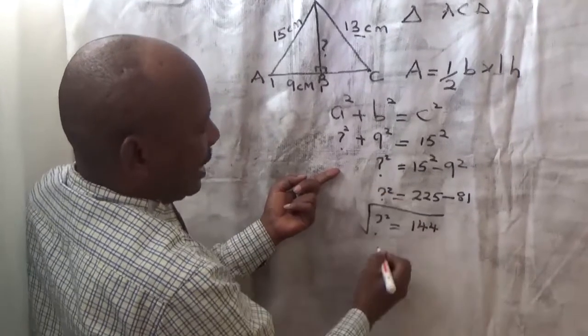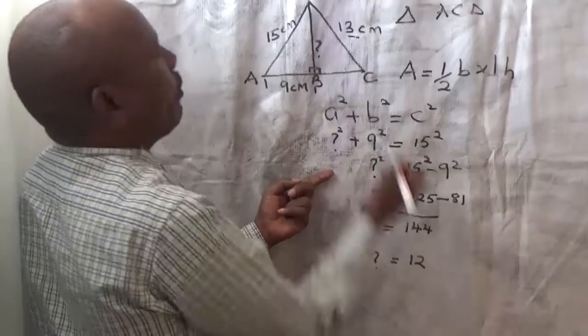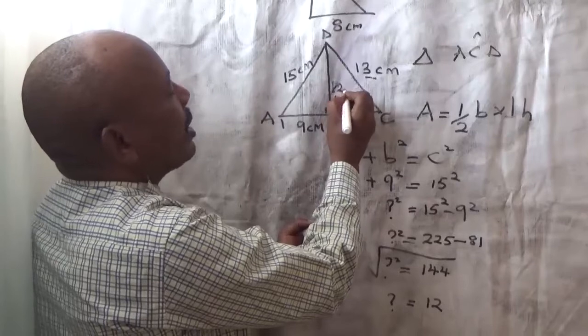Then, we find the square root of all that, our unknown, which was a question mark, becomes 12. So, we have got perpendicular height here, which is 12 centimeters.